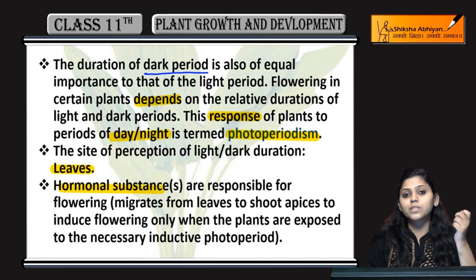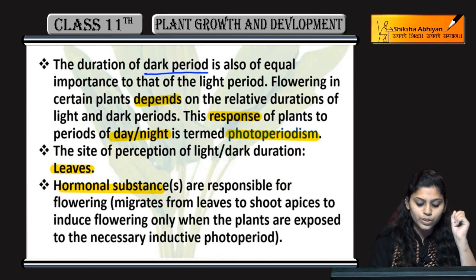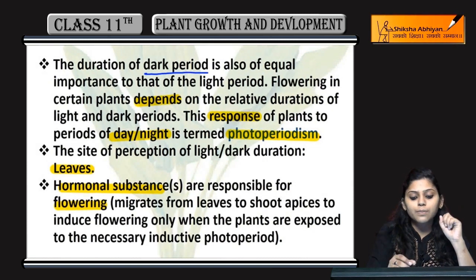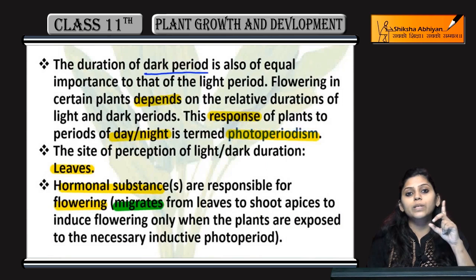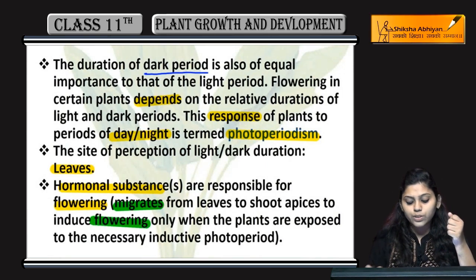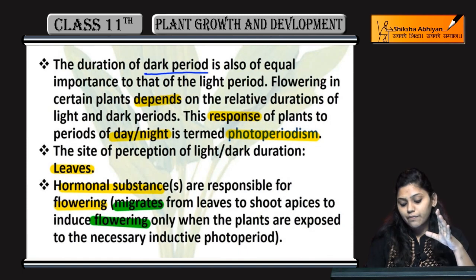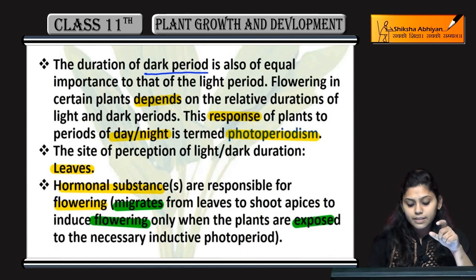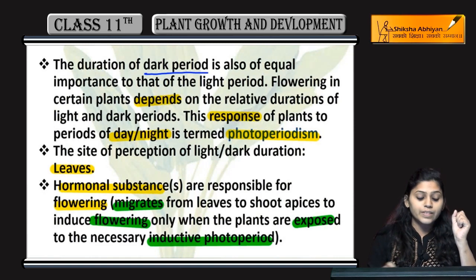Hormonal substances are also responsible to induce flowering. जो hormonal substances हैं, वो migrate करते हैं from leaves to shoot apices ताकि वो induce कर सके flowering, when plants are exposed to necessary inductive photoperiod.